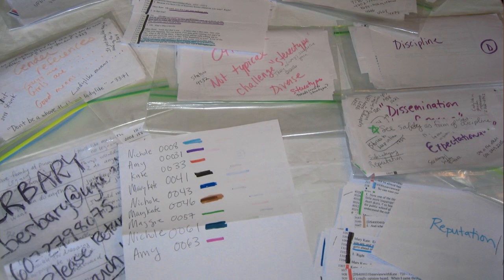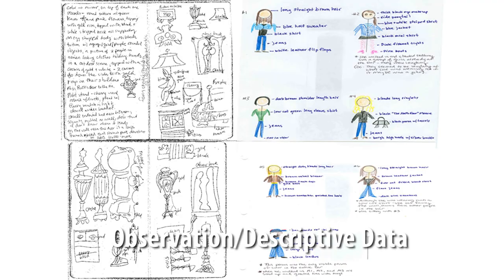I remember the moment 11 years ago now, where I was sitting at my dining room table trying to take all the data I had generated through numerous life story interviews, participant observations, and artifact collections, and fit them into discrete, agreed-upon categories and themes. All the messy data sat in front of me, transcribed and disjointed, as I tried to make sense of it, keeping in mind my research questions, experiences, and post-structural theories that I was thinking with.